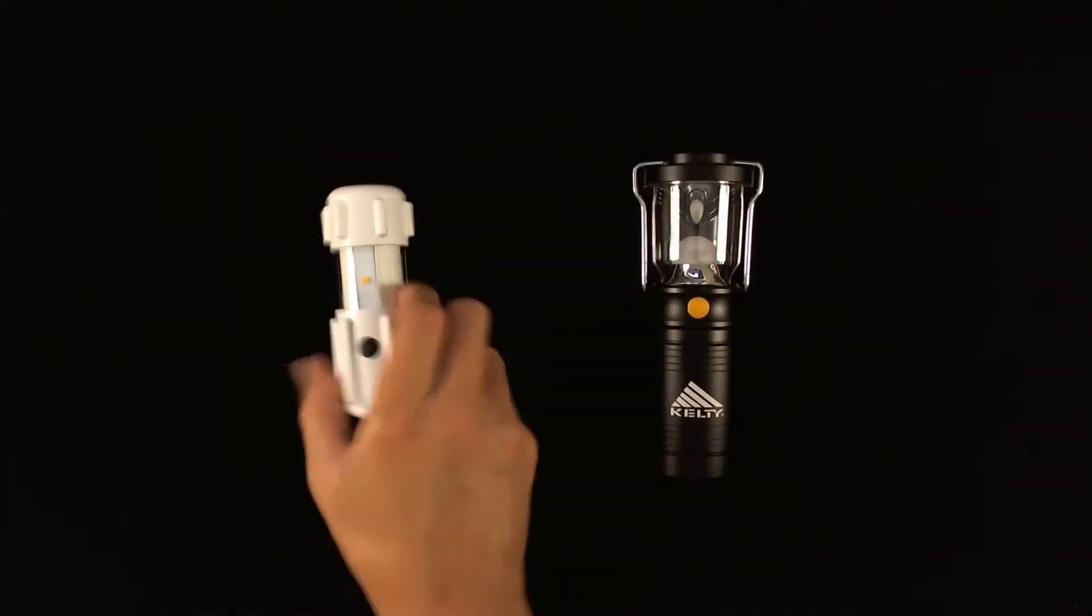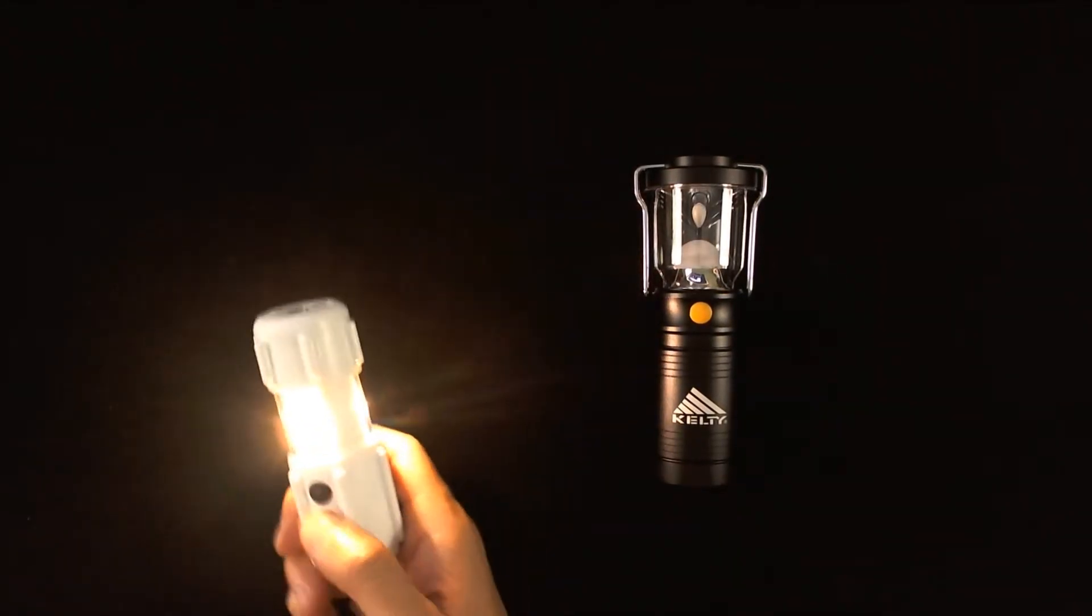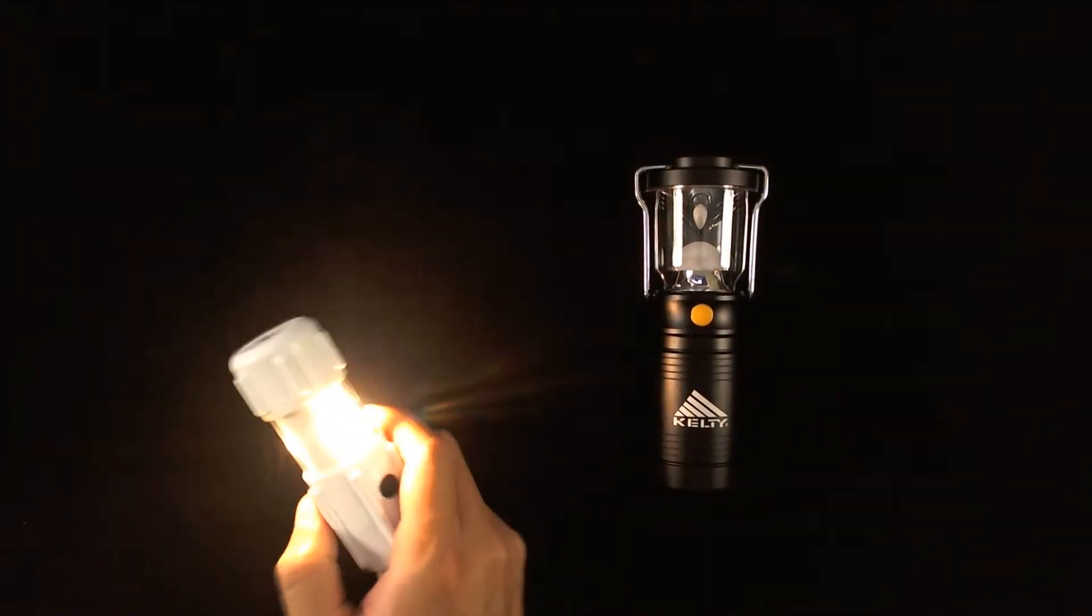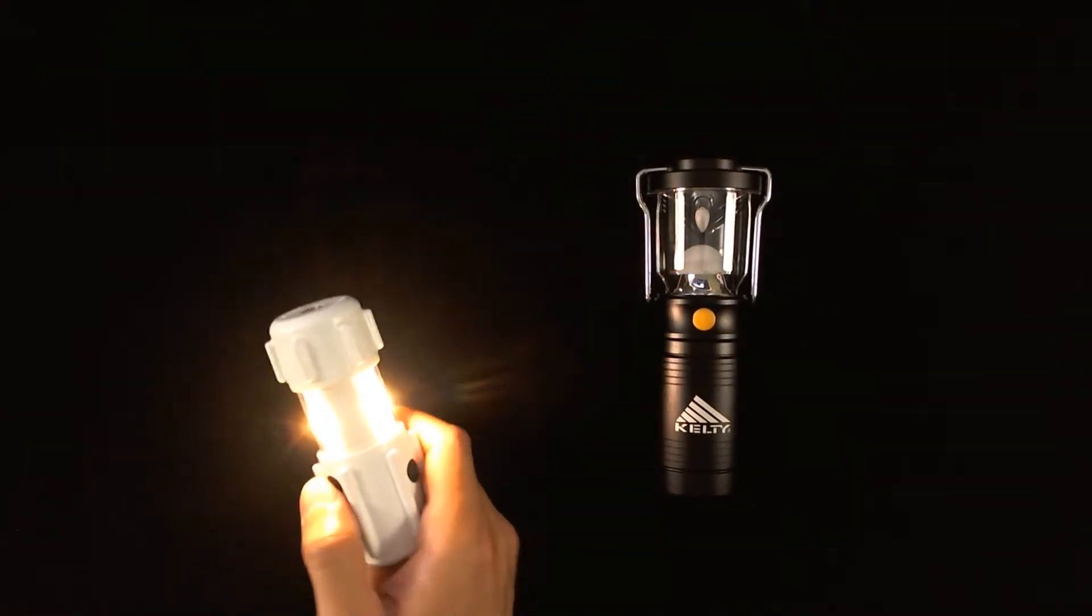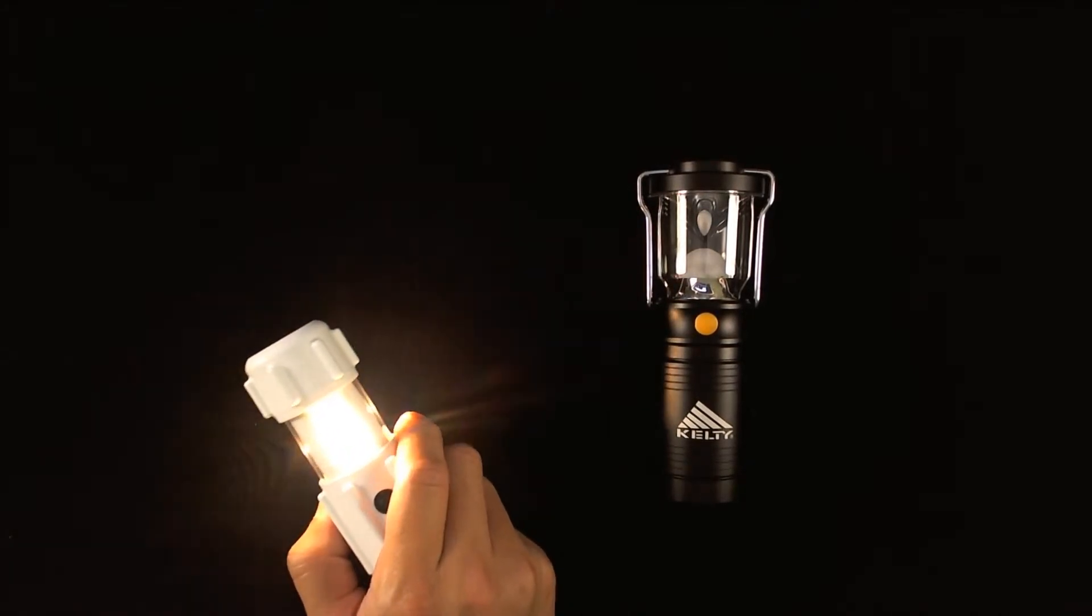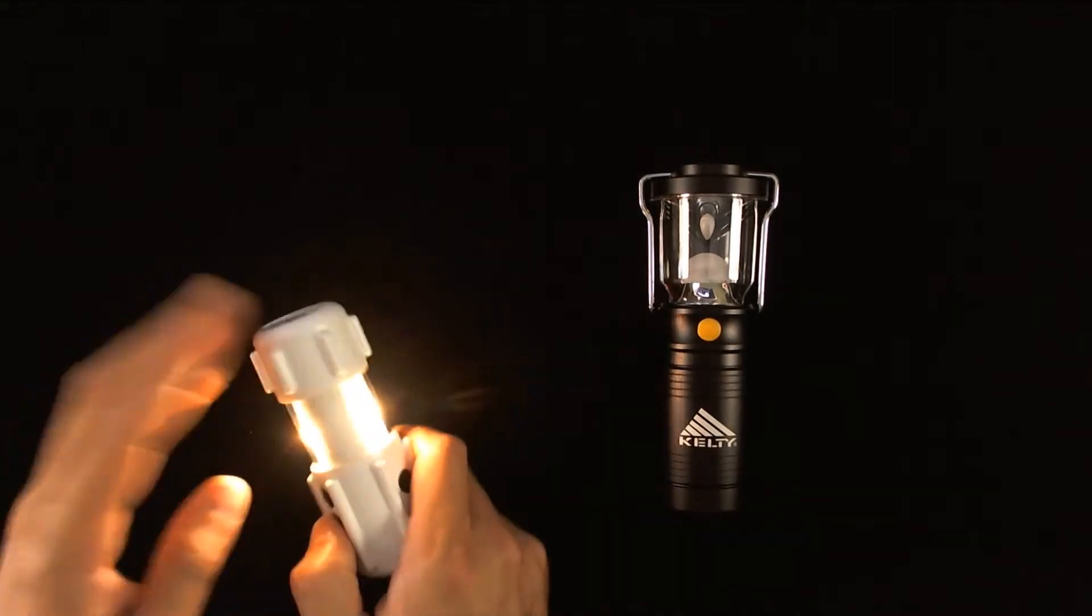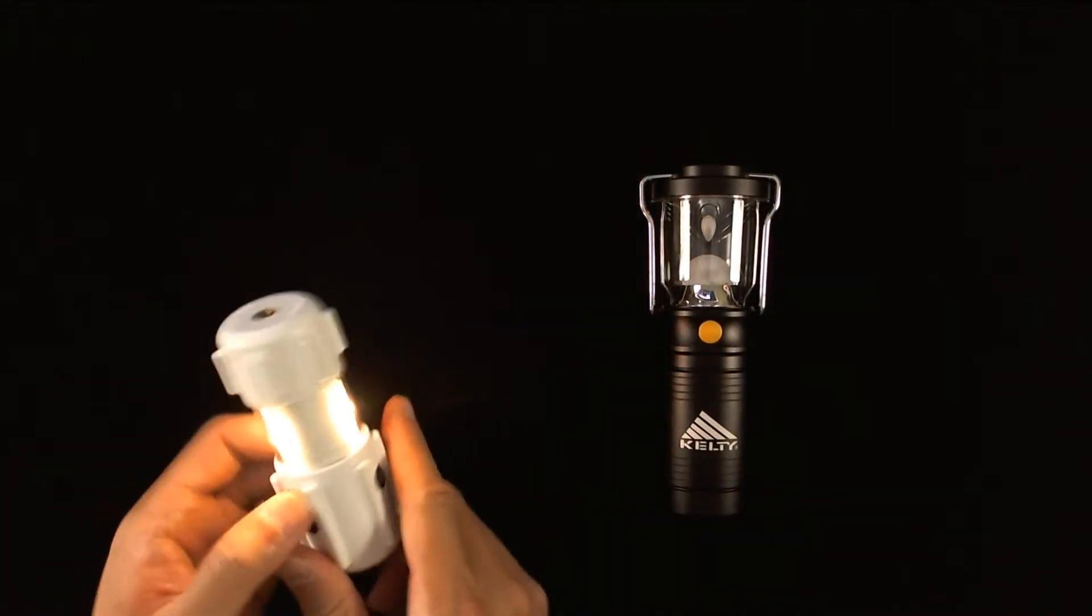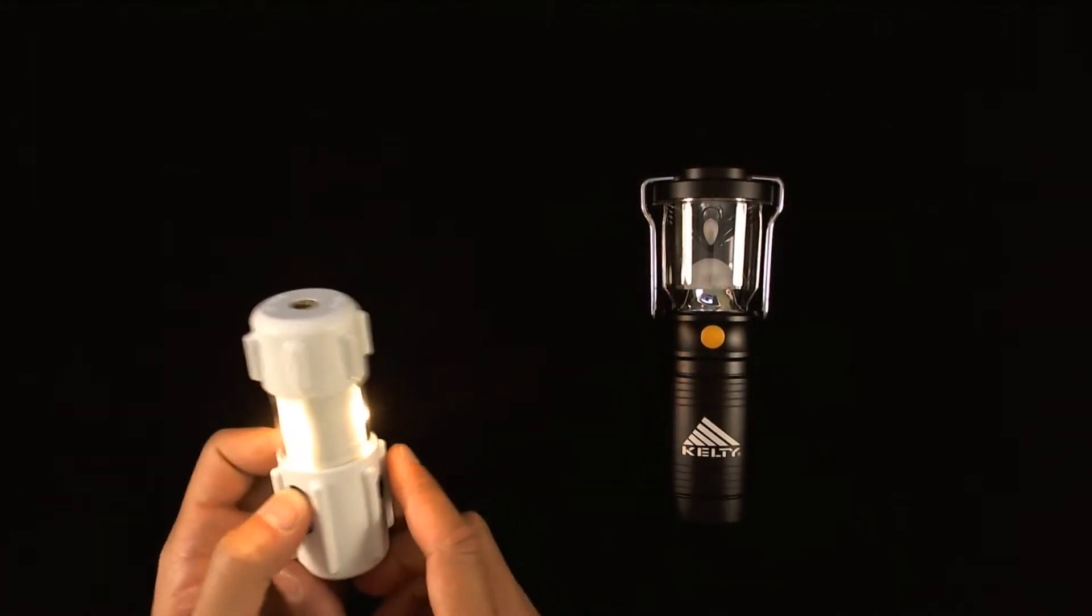The RPAL on the other hand has 15 logarithmic brightness settings and if we were to compare equivalent brightness output levels the RPAL has a 28.1 lumen setting which can last 32 hours or a 37.5 lumen output setting which can last 24 hours.